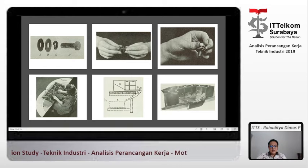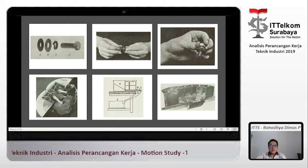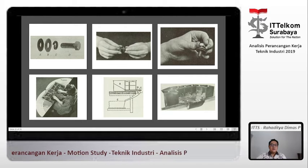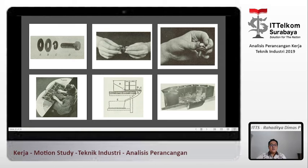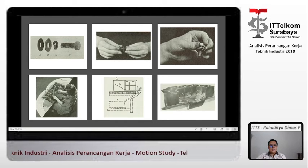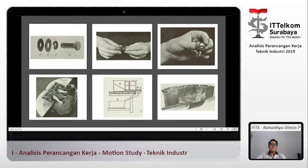Di gambar nomor 5, ada yang namanya container. Poin A adalah container. Jalur D memanfaatkan gravitasi, begitu juga jalur A. Yang ini namanya feeded bins, yang ini namanya container, sudah menggunakan kaidah gravitasi atau ballistic movements.